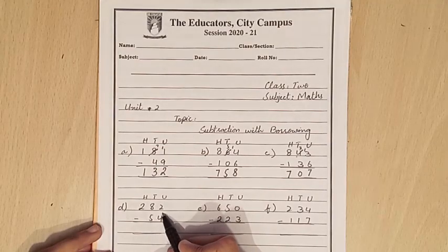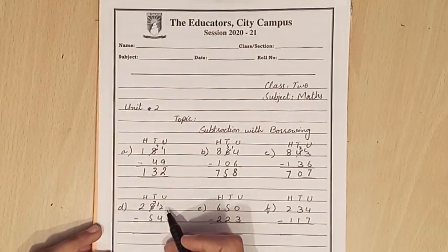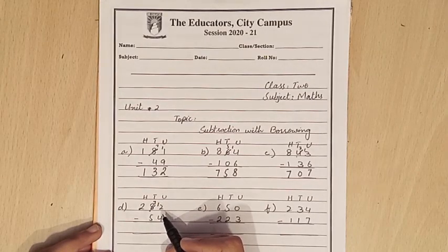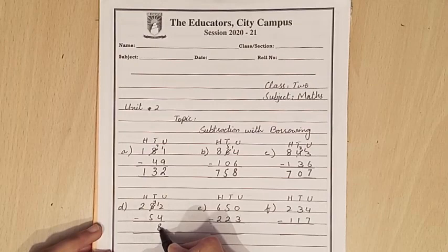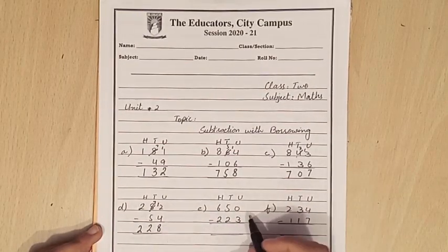Next, 2 is smaller than 4. We will borrow it. Now it's 12. We cut 4 from 12, the answer is 8. 7 minus 5 is 2, and 2 is as it is. 228 is the answer.